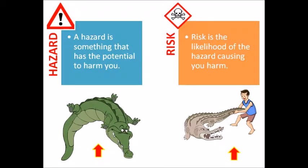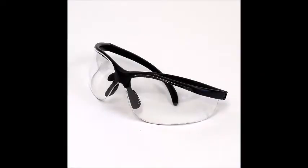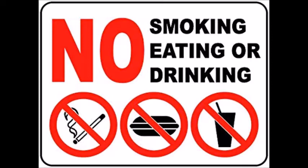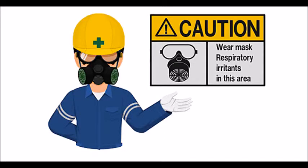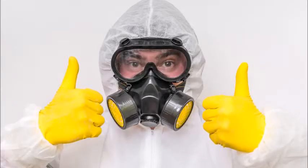Control measures: a hazard is something that has the potential to harm you. Risk is the likelihood of the hazard causing you harm. Control measures help minimize the risk and the hazards. Examples include exhaust ventilation, PPE, work controls such as keeping your face out of the methylene chloride vapor zone, and no eating, drinking, or smoking inside the designated area. Respirators are used when exposure is likely to exceed the PEL and STEL, when controls are being implemented or installed, when controls are not feasible or sufficient, and during emergencies.